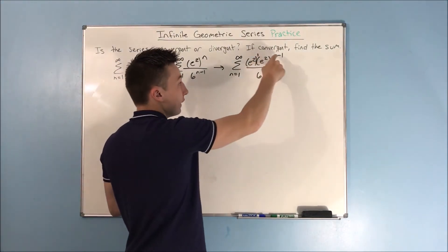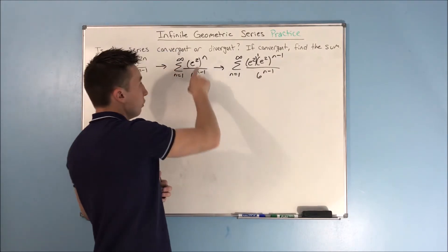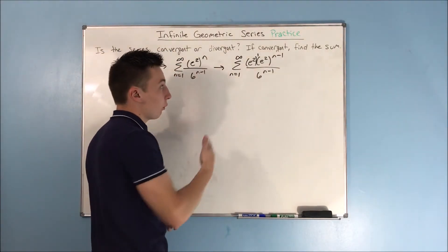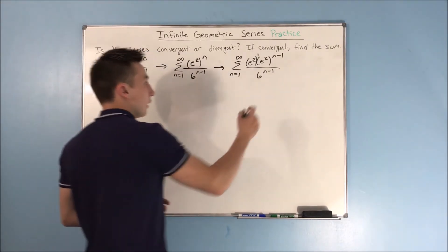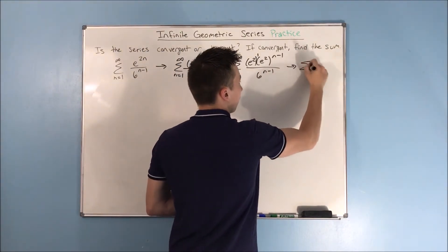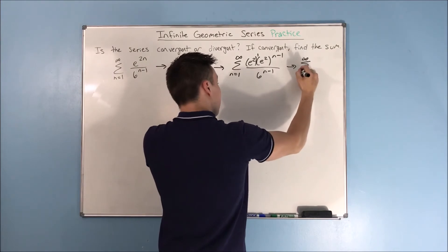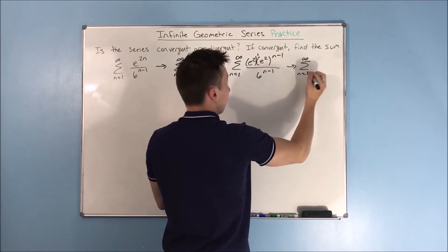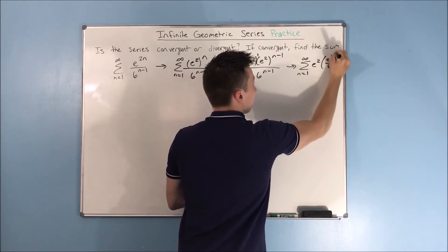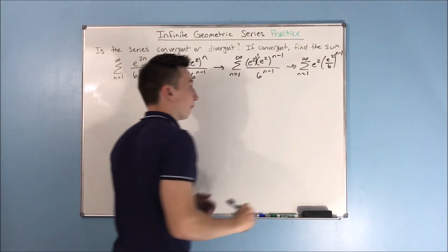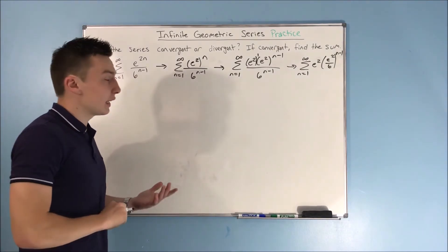It's e squared to the first power times e squared to the n minus 1 power. Well, when you add these exponents together, you end up with n. So, this is okay. Now, we can rewrite this again as the sum from n equals 1 to infinity of e squared times e squared over 6 to the n minus 1 power.